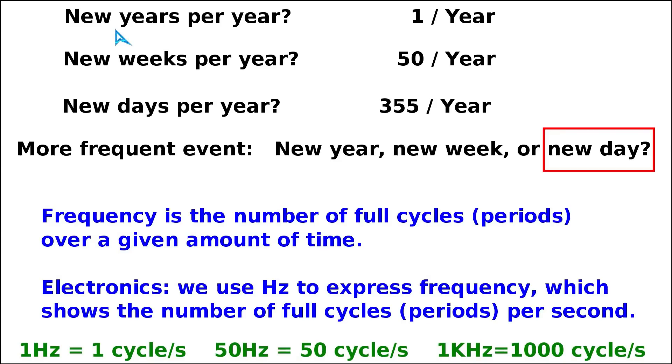It's relatively easy to understand frequency if we ask ourselves: how frequently do we celebrate a new year? Once per year. How frequently do we have a new week per year? About 50 new weeks. And new days? About 355 new days per year. Which one is more frequent? Clearly, we have 355 new days per year, so this is the most frequent event.